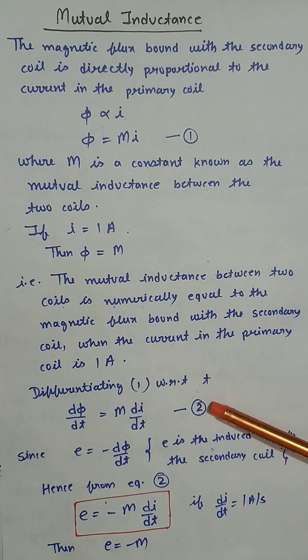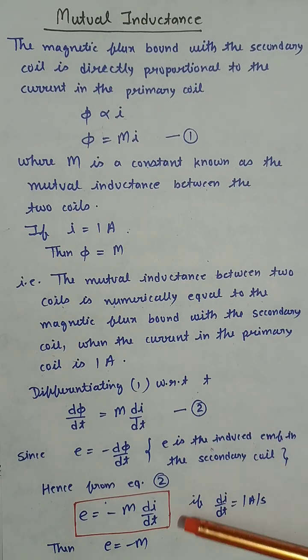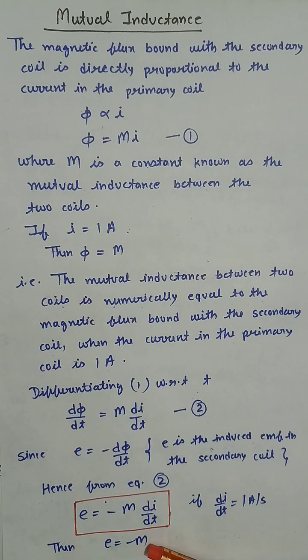Hence from equation 2, we get E equals minus M di/dt. If di/dt equals 1A per second, then E equals minus M.